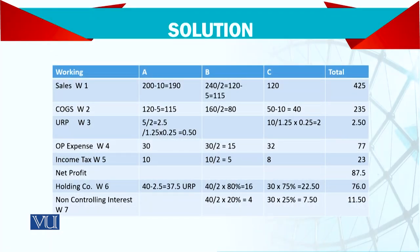Now let's see the solution — it's not something difficult. The workings are given alongside. A's sales of 200,000 had 10,000,000 sold to group, which was deducted, leaving 190. Similarly, B's sales are 240 but we take only half — 120 — and adjust the 5 million unrealized profit, giving 150. C has no change.